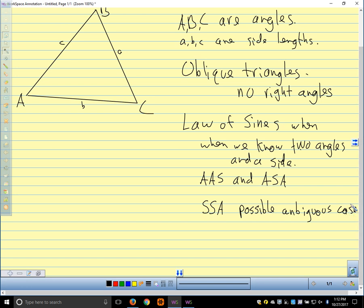And the ambiguous case we'll talk about separately next time. And if you remember back from geometry, when you were proving triangles congruent, you could not use a side-side-angle theorem to prove triangles congruent. And that's because there are sometimes, depending on the configuration of the triangle, there are two possible triangles. All right, so law of sines. Very friendly, very nice, easy to work with.